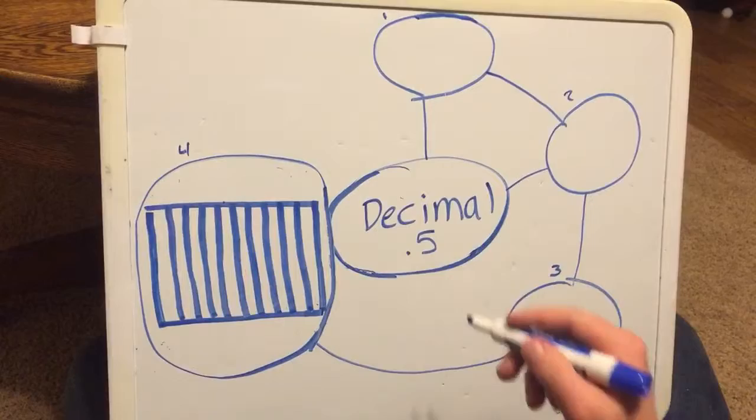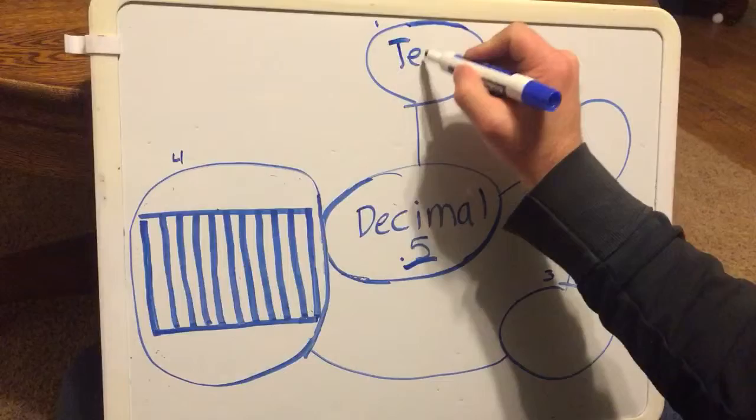The first thing I think about when I look at 0.5 is place value. The 5 is in the tenths place.